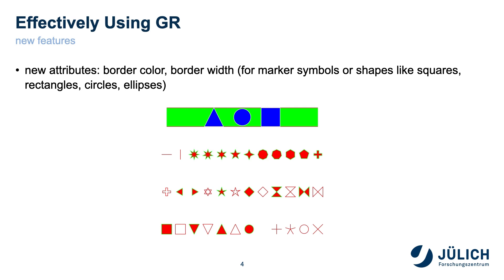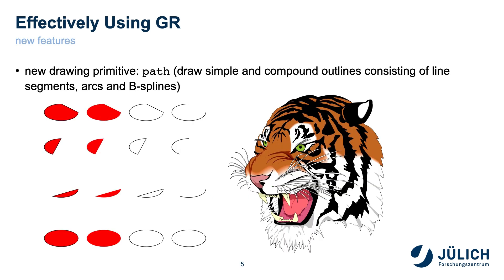Borders are now real borders and are no longer simulated by multiple drawings of shapes. They can be used not only for marker symbols, but also for shapes such as squares, rectangles, circles, and ellipses. In the output drivers, these are implemented as efficiently as possible using native device-specific drawing functions. You can see examples of different shapes and how they can be used to create complex representations. The popular PostScript sample document, the tiger, can be drawn as a sequence of paths in GR in less than 5 milliseconds.